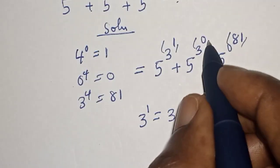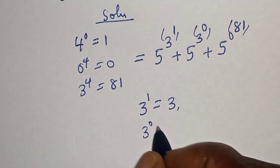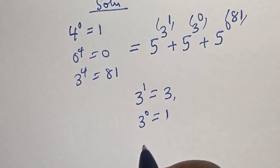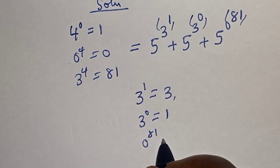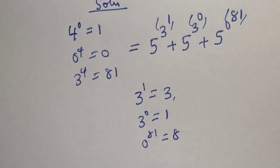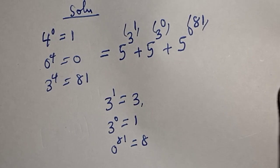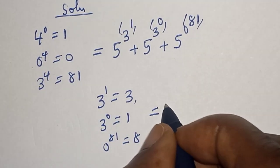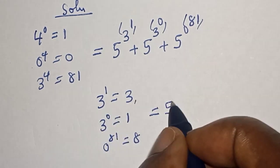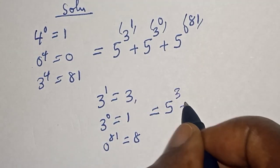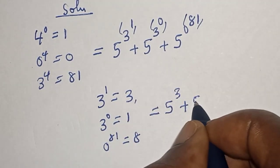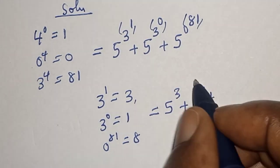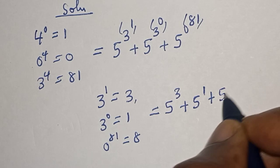Three raised to power one is equal to three. Then three raised to power zero is equal to one. And zero raised to power 81 is equal to zero. So this is equal to five raised to power three, plus five raised to power one, plus five raised to power zero.